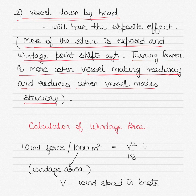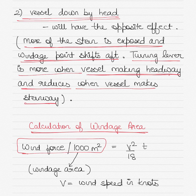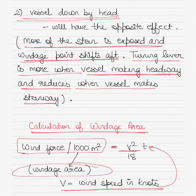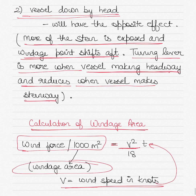We have talked about windage area, but how do we calculate it? The formula for calculating wind force per thousand square metres is: the square of the wind speed divided by 18. That's how you calculate the windage area. I hope this quick video on the effect of wind and trim on the turning effect of ships, including the concept of windage area, has been useful. See you soon with the next video!